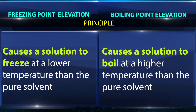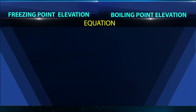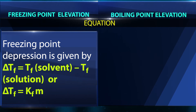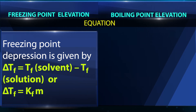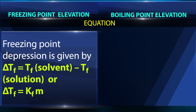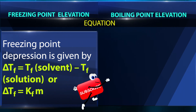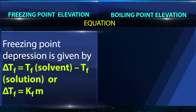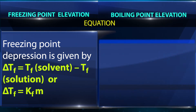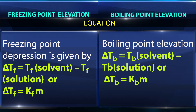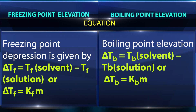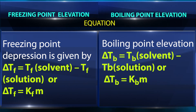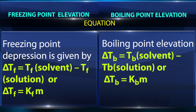The principle of freezing point depression causes a solution to freeze at a lower temperature than the pure solvent. Boiling point elevation causes a solution to boil at a higher temperature than the pure solvent. The equation for freezing point depression is ΔTf = Tf(solvent) − Tf(solution), or ΔTf = Kf·m. For boiling point elevation: ΔTb = Tb(solvent) − Tb(solution), or ΔTb = Kb·m.